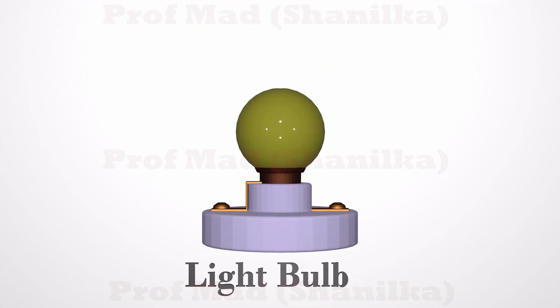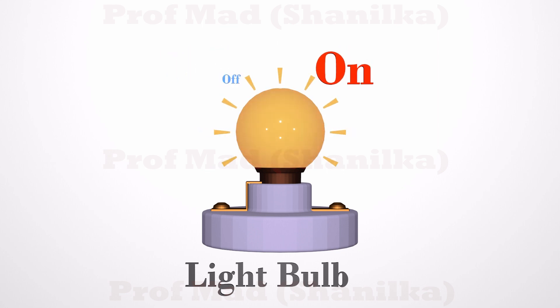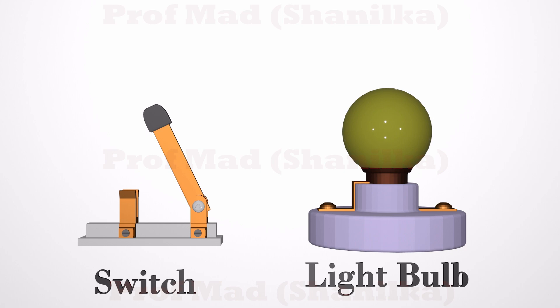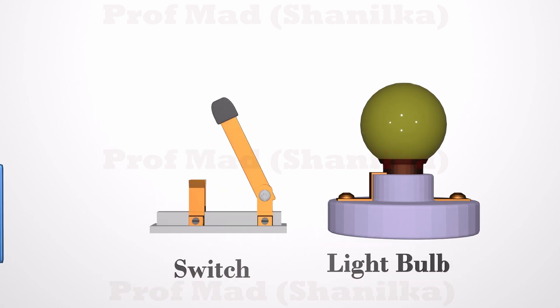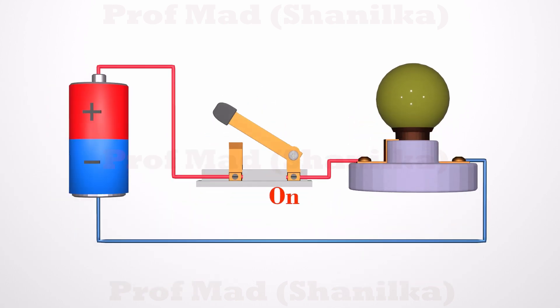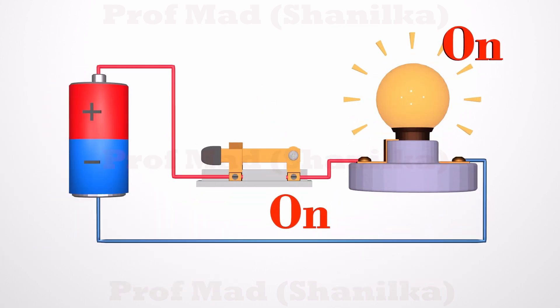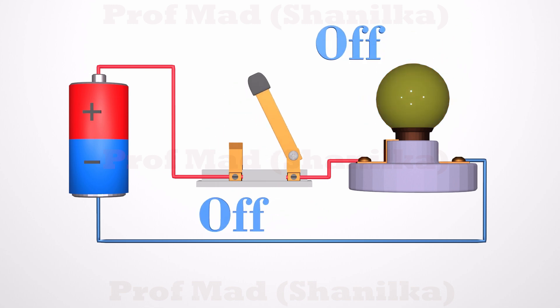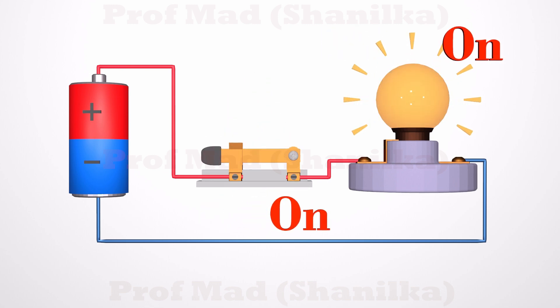For an example, here is a light bulb. How do we control it? Turn it off and turn it on whenever we need. Obviously, a switch is the first thing that comes to our mind. When we turn on the switch, the light bulb turns on, and when we turn off the switch, the light bulb turns off. Pretty simple.